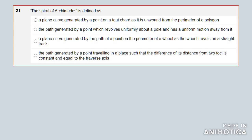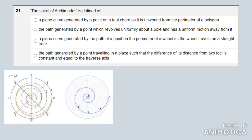The first question says: the spiral of Archimedes, or the Archimedes spiral as you may know it, is defined as: A) a plane curve generated by a point on a taut chord as it is unwound from a perimeter of a polygon; B) the path generated by a point — and this is what an Archimedean spiral looks like — the path generated by a point which revolves uniformly about a pole and has a uniform motion away from it.